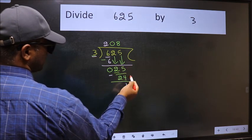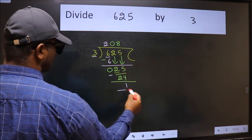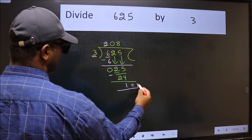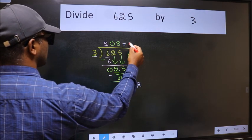No more numbers to bring it down. So we stop here. This is our remainder and this is our quotient.